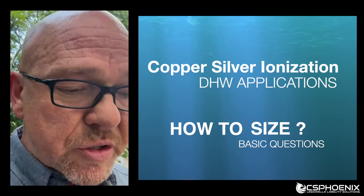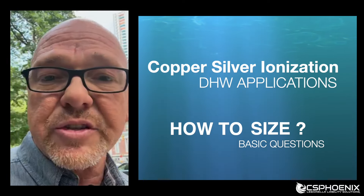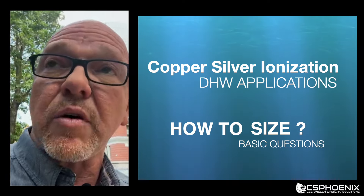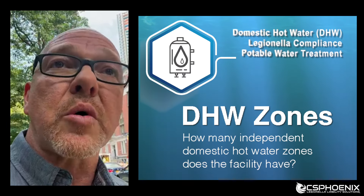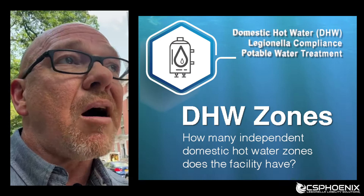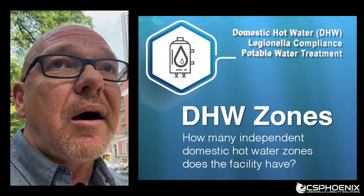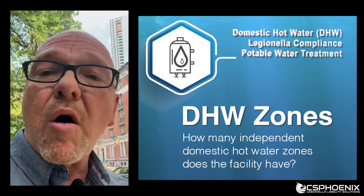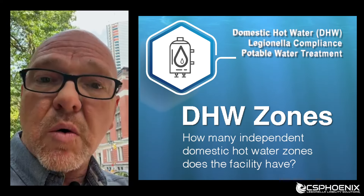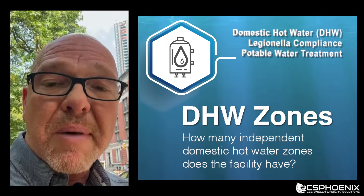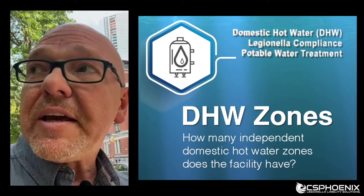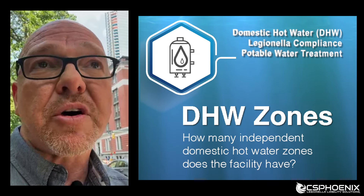For a hot water application, we start with the number of hot water zones. A hot water zone is determined by the number of hot water heaters that push water out into the building and return it back to the heater without blending between each other.